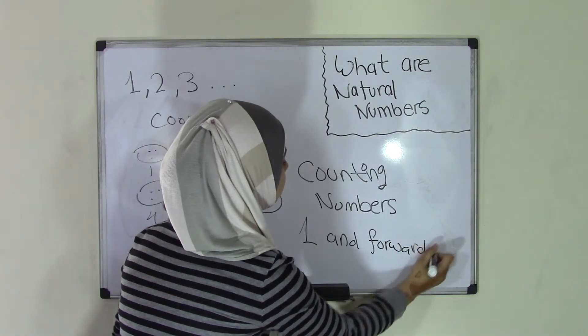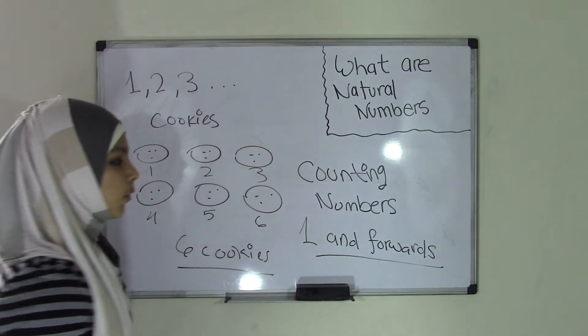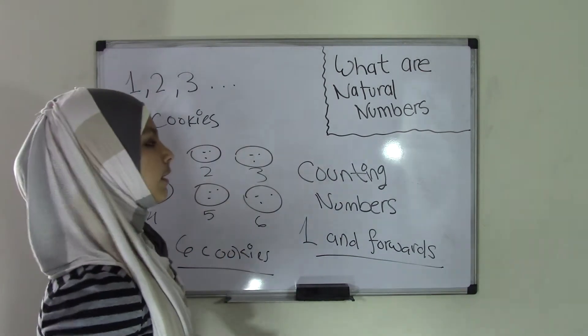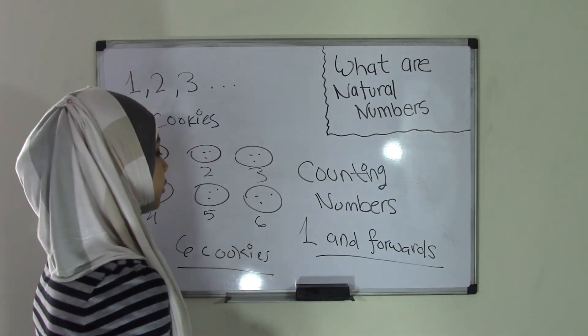Is that you need to go from 1 and forwards. So remember that for natural numbers, 1 and forwards. And remember, they're also counting numbers. So that's that for what are natural numbers.